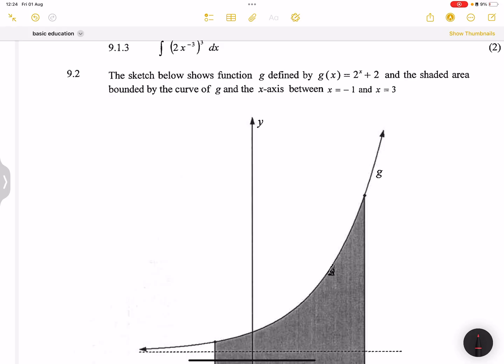So the area of any function or under any function will be the integral. So they said between negative 1 and 3. So from negative 1 to 3 of this function g of x. But we know that the function is given to us as 2 raised to the exponent x plus 2. And this is with respect to x.